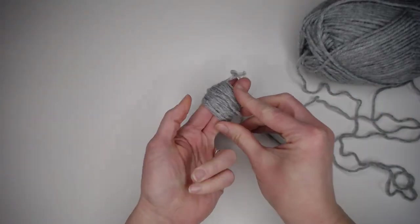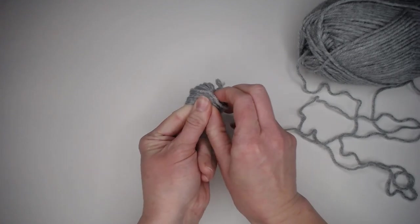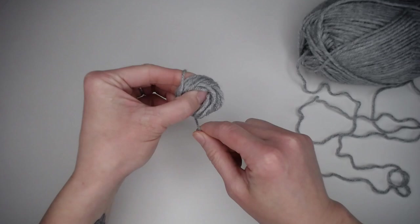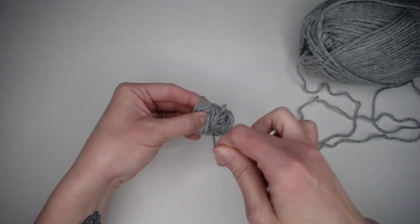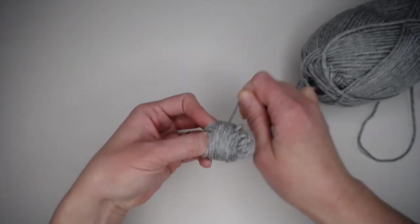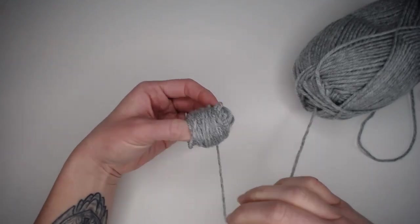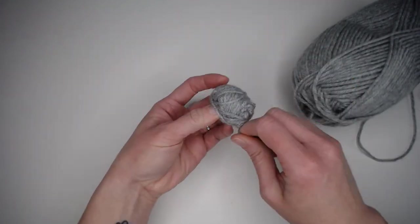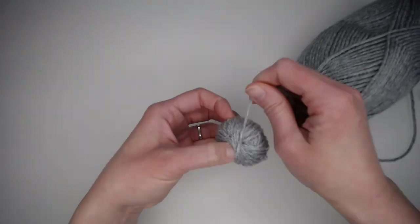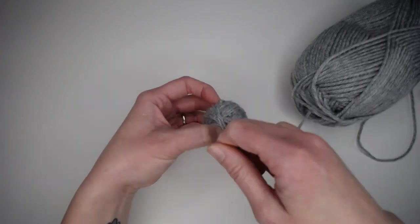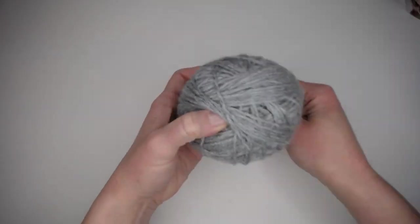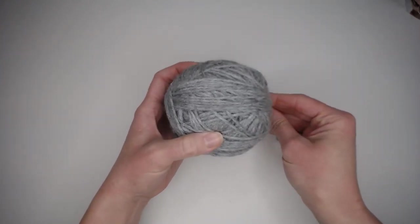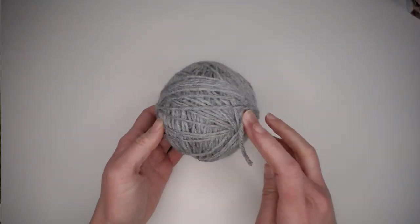And then at a certain point, I will take that yarn off of my fingers, pinch it, and then I'll start wrapping the yarn going this direction. And then as it's building, keep rotating it as I am wrapping the yarn and that starts to create the yarn ball. And that is how you roll a ball of yarn.